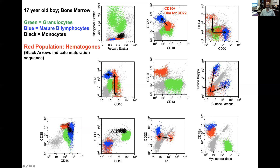Looking at CD22 versus CD10: the defining marker is really a pan B cell marker like CD22 or CD19 co-expressed with CD10. CD10 is also called CALLA — common ALL antigen — and CD10 positivity in the context of an ALL used to be called a CALLA-positive ALL. Hematogones are defined by positivity for CD10, but are DIM for CD22 compared to mature B cells. Their maturation spectrum goes from dim CD22 to bright CD22 as they lose their CD10. When they become CD10 negative, we don't call them hematogones anymore — they basically become mature B cells.